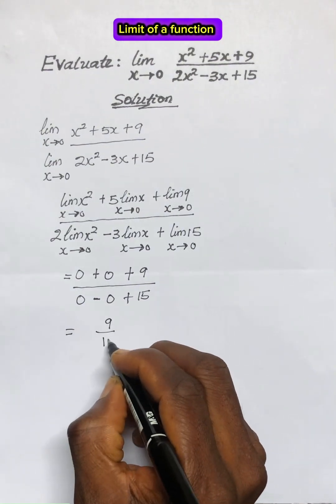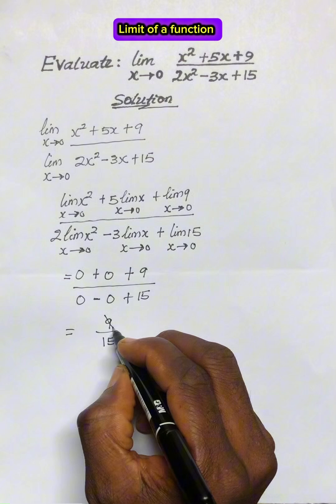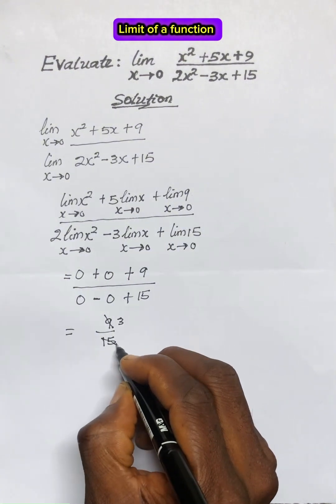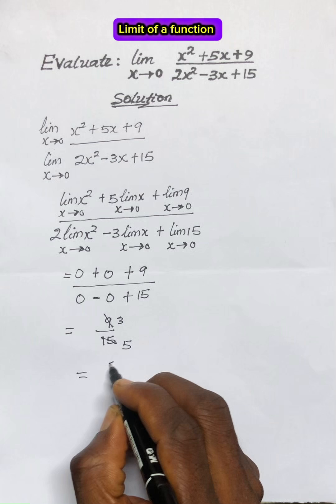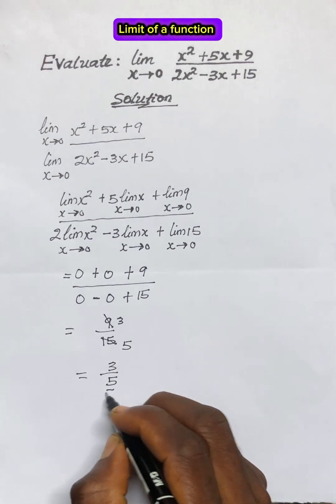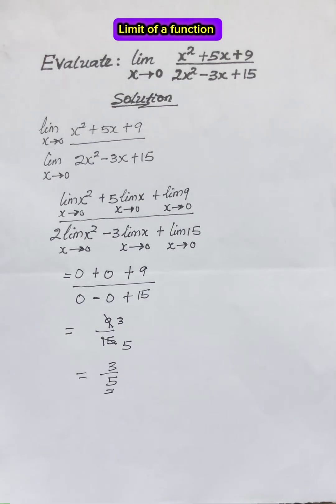So that we have 9 all over 15. And 3 will go here, 3 will go here, 5. And then we now have 3 over 5 as the answer.